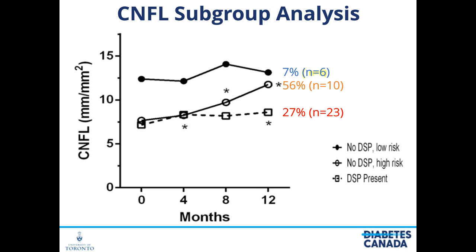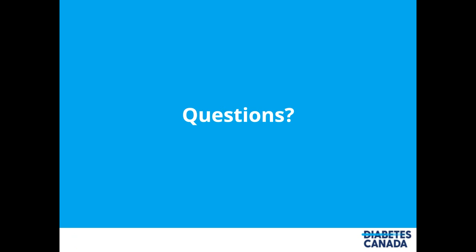One of the biggest unmet needs is how to treat diabetic neuropathy — how to get nerves to regenerate and recover and work normally. Because diabetic neuropathy is the most common neuropathy, this is one of our largest unmet needs worldwide and in Canada. We hope to be working on this further to see if we can get a positive result. That brings me to the end of my presentation, and I would welcome any questions from the audience.